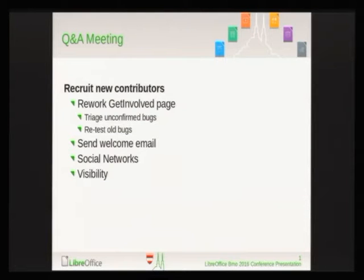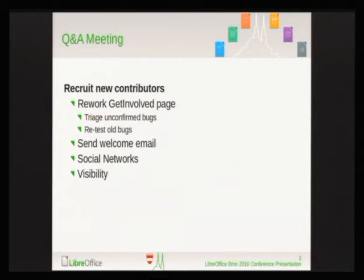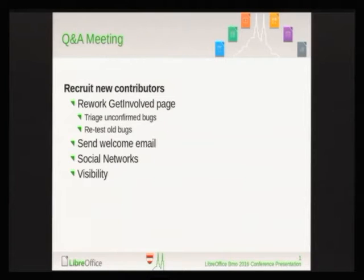Another idea is to send a welcoming email to newcomers — not to everyone, but focused on people who give good information or are already doing some triaging when they report or comment on a bug. It could also be nice if we could use social networks like Reddit or Twitter to recruit new people.